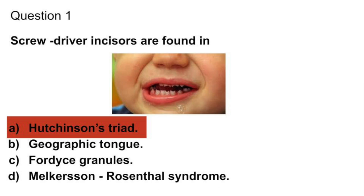Hutchinson triad means interstitial keratitis, malformed teeth, and eighth nerve deafness. These three together are called Hutchinson triad. Clinical features are found with congenital syphilis, including mulberry molars, moon molars, or Fournier's molars. Hutchinson's incisors are screwdriver-type incisors where the mesial and distal surfaces of the crown are tapered and the incisor edges are usually notched in congenital syphilis.